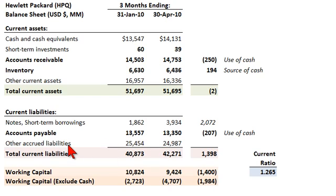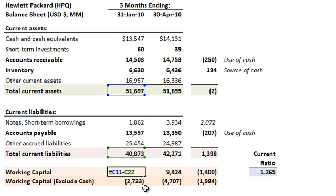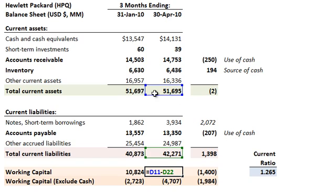Again, I collapsed several other miscellaneous liability accounts into 'other current liabilities.' With only three accounts, we get total current liabilities of about $42.2 billion for Hewlett-Packard. Now we can look at the two popular definitions of working capital. The first is the most straightforward — the solvency perspective: total current assets minus total current liabilities equals about $9.4 billion.